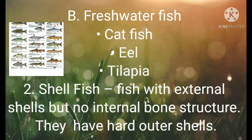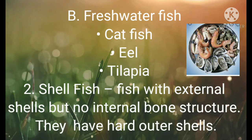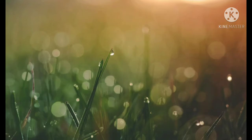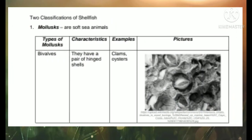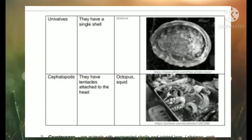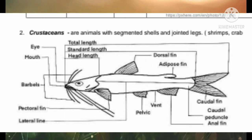Shellfish are fish with an external shell but no internal bone structure — they have hard outer shells. Shellfish have two classifications. First, mollusks, which are soft sea animals. The types include bivalves, which have a pair of hinged shells — examples are clams and oysters. For univalves, we have a single shell — example is abalone. For cephalopods, they have tentacles attached to the head — examples are octopus and squid. For crustaceans, these are animals with segmented shells and jointed legs — examples are shrimp and crabs.